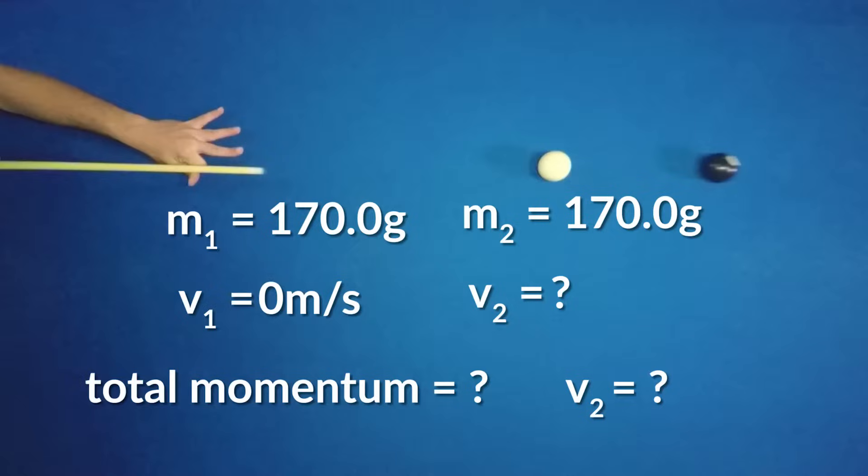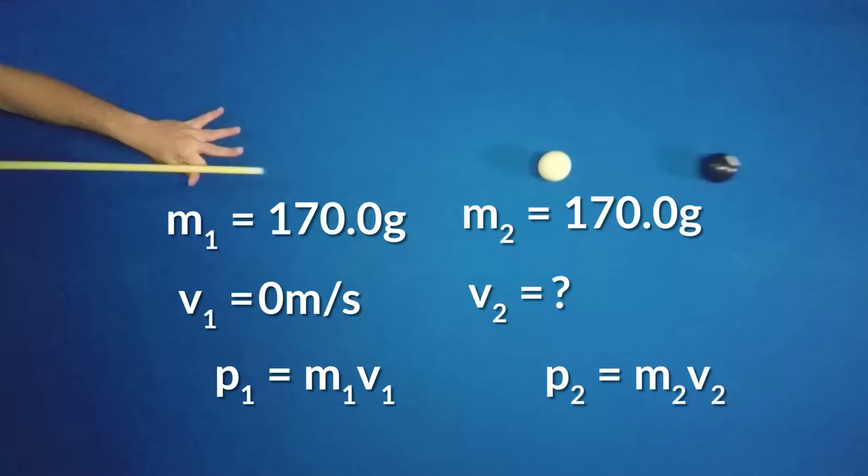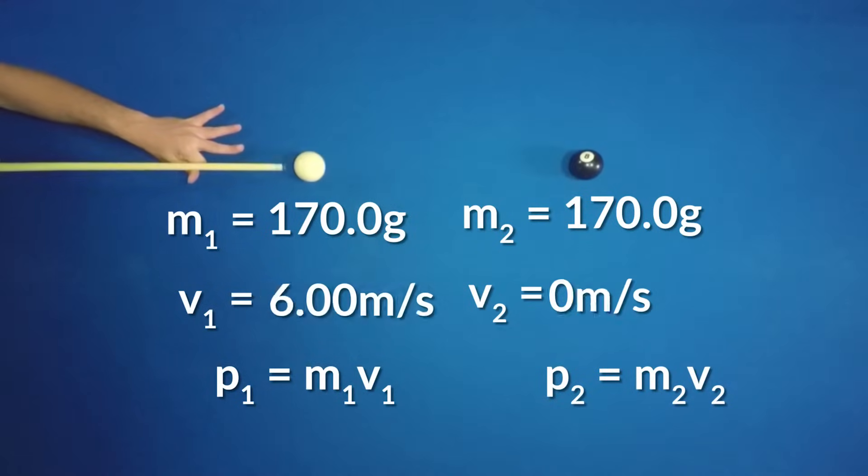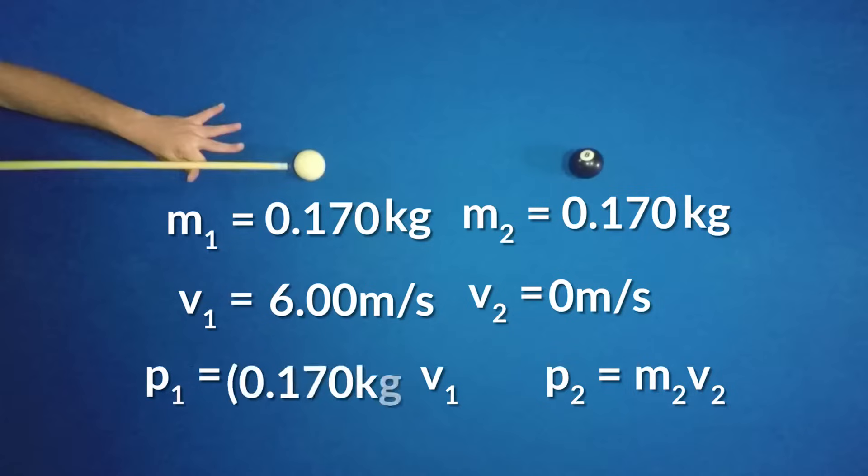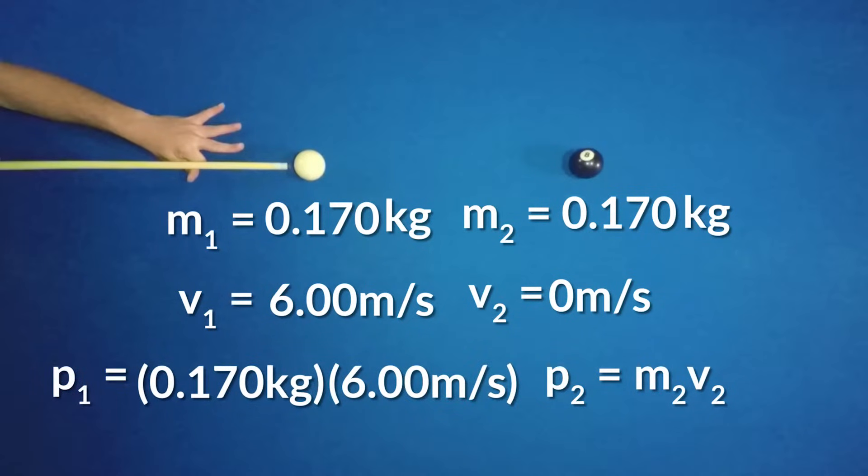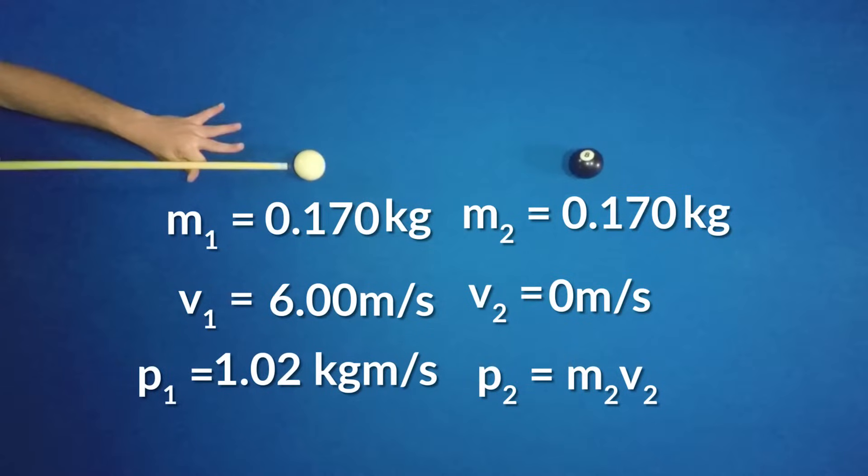Remember, the momentum of an object is equal to its mass times its velocity, P equals m times v. The unit for momentum is kilogram meters per second. To be consistent, we'll convert the mass to kilograms. The cue ball has a mass of 0.170 kilograms, so let's multiply that by the velocity of 6.00 meters per second. So the momentum of the cue ball before the collision is 1.02 kilograms meters per second.